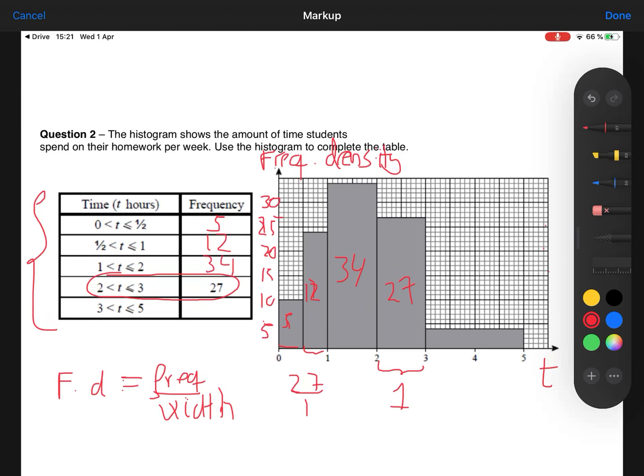And finally, the last bar has got a height of 4 and a width of 2, because from 3 to 5 the width is 2, the height is 4. So that's an area of 8. So there were 8 people. And that's how you use an incomplete histogram and an incomplete data table to fill the gaps and figure out how many people there were in each category.